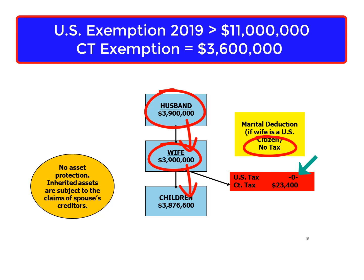On the other hand, the Connecticut estate tax exemption is three million six hundred thousand dollars. So when the wife dies, her estate would exceed the Connecticut exemption by three hundred thousand dollars. The tax on that would be about twenty-three thousand dollars. That's how the taxes would work with respect to this simple will plan.